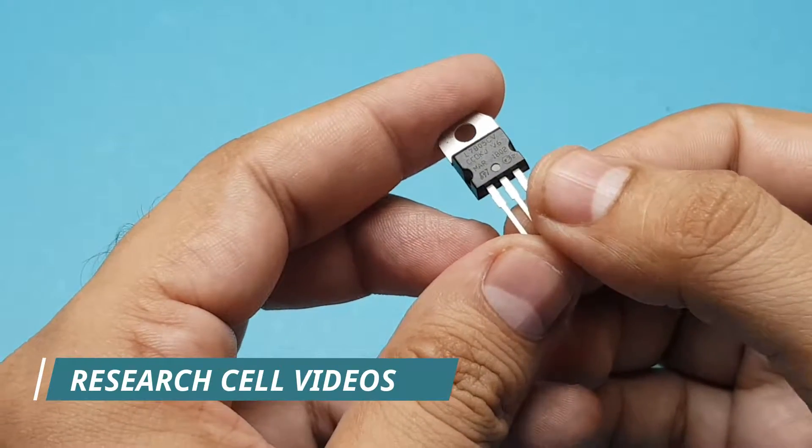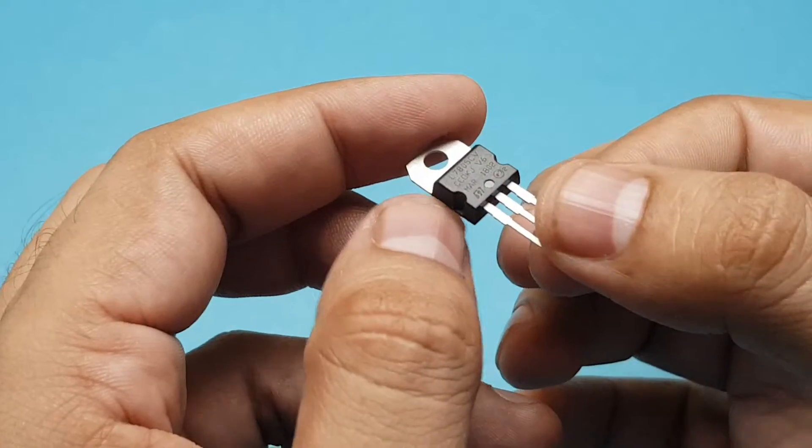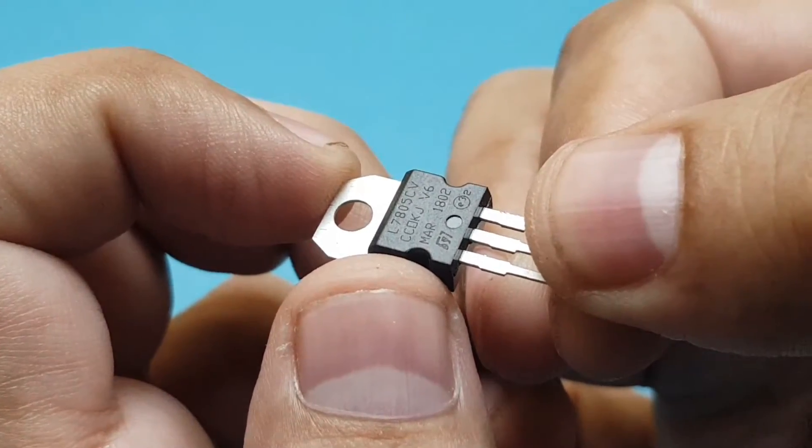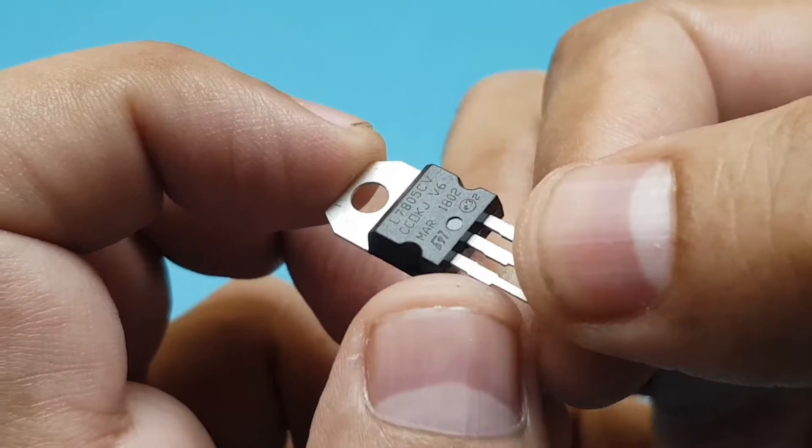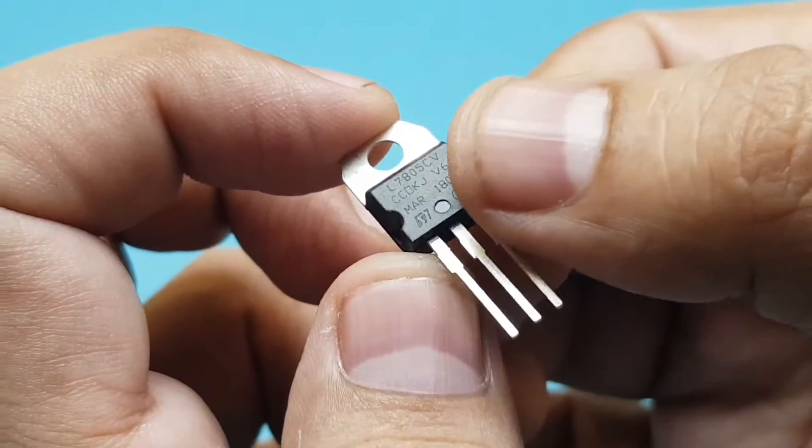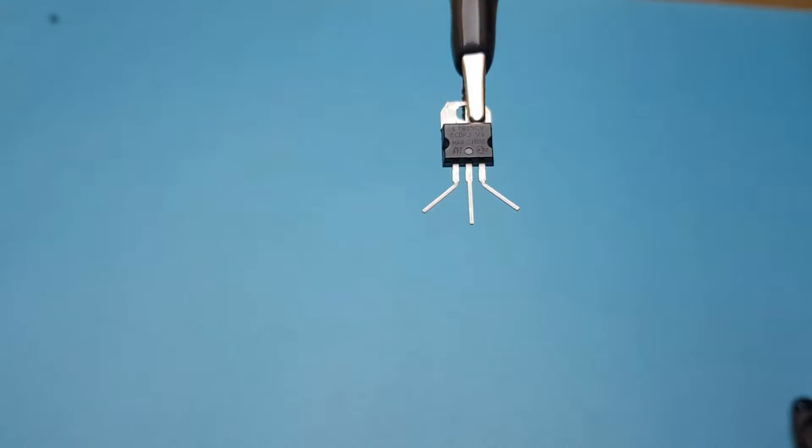Hi and welcome to research tell videos. My today's video is about LM7805, which is a linear voltage regulator IC. It is very cheap and you can easily buy it from almost any electronics market. I will now show you a practical and working example of LM7805.